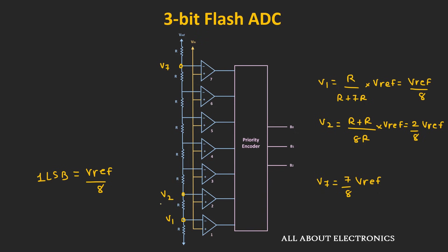Each comparator compares the input voltage with its reference voltage. If the input voltage is greater than the reference voltage, then the output of that particular comparator will become high. If that is not the case, it will remain low. Based on the comparator outputs, this encoder gives the binary code.